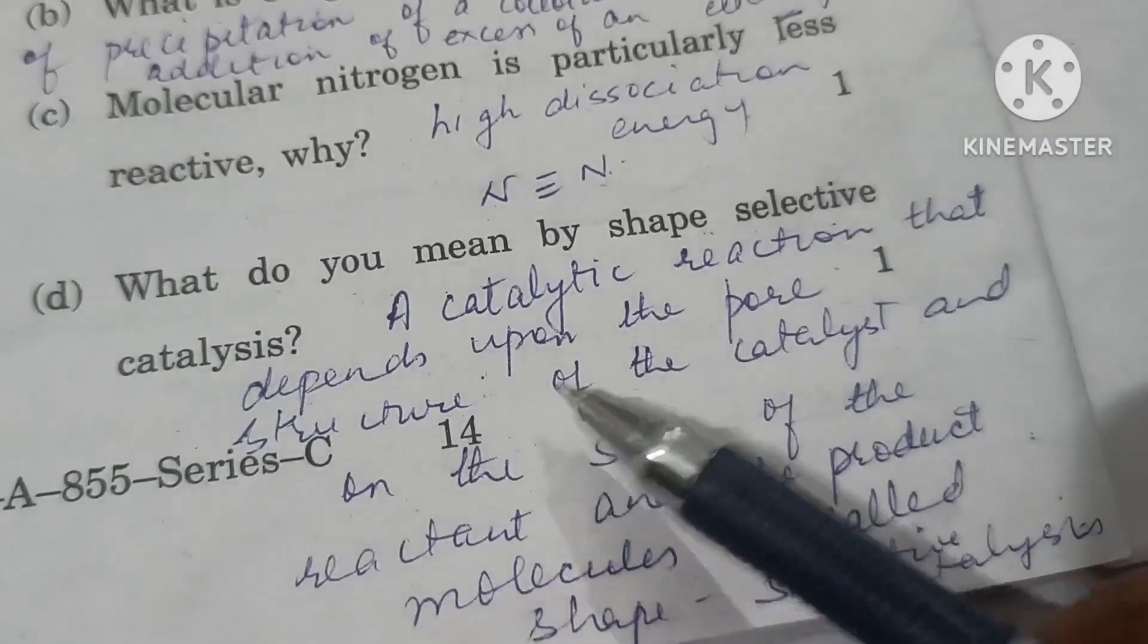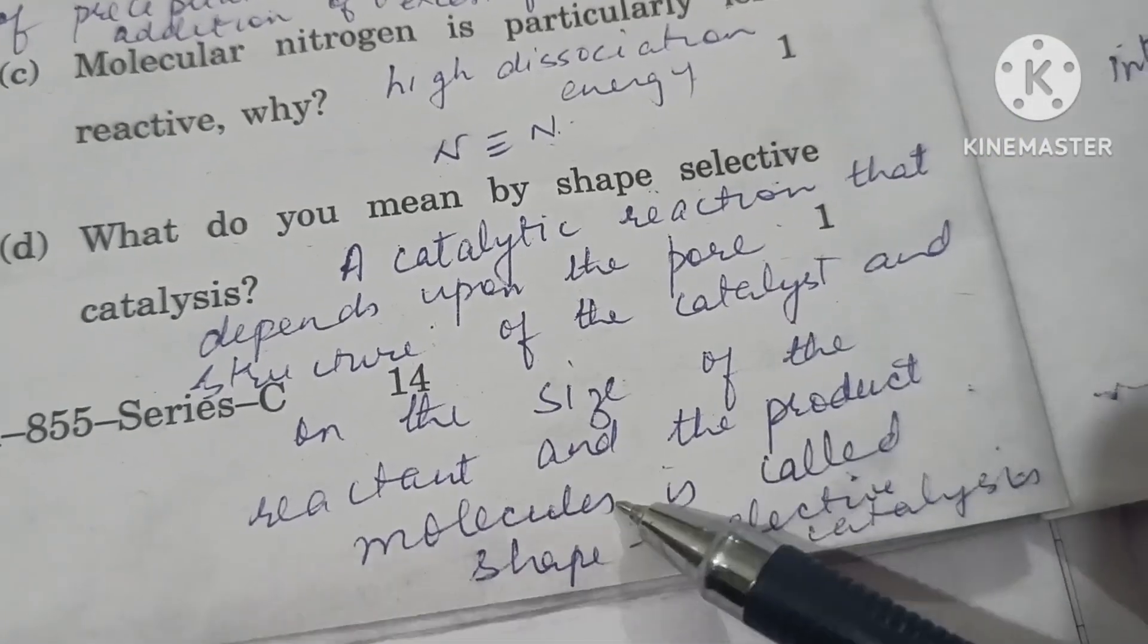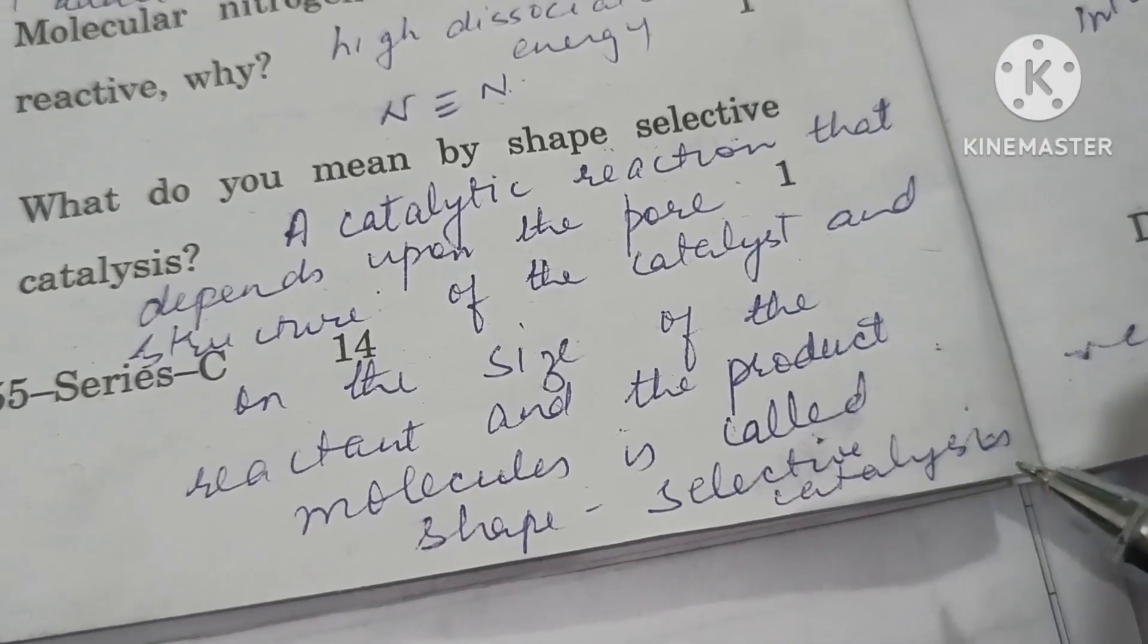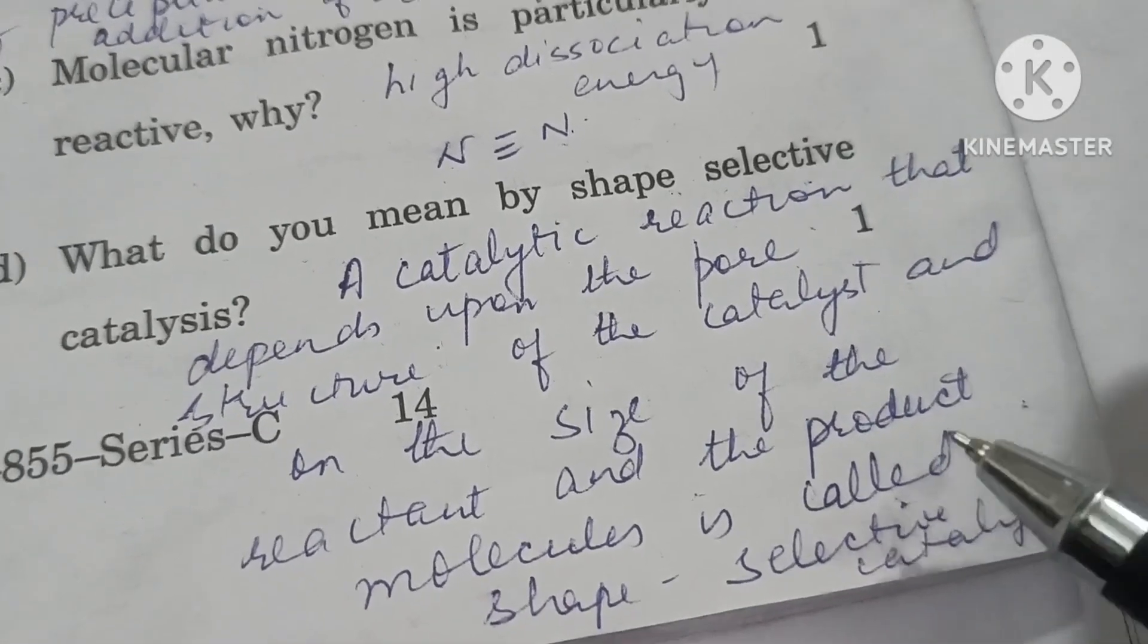What do you mean by shape selective catalysis? A catalytic reaction that depends upon the pore structure of catalyst and on the size of reactant and product molecules is called shape selective catalysis. For example, zeolite is acting as a shape selective catalyst.